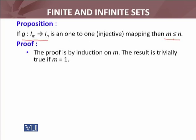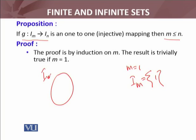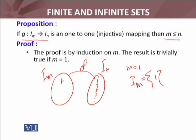Then we are going to define the cardinality of a set — the number of elements in a set. Proof is by mathematical induction, and induction is applied on m. So m equals one — I_m mein sirf ek hi element hai. Any function g from I_m to I_n will by definition be one-to-one. So P(1) is true by mathematical induction.